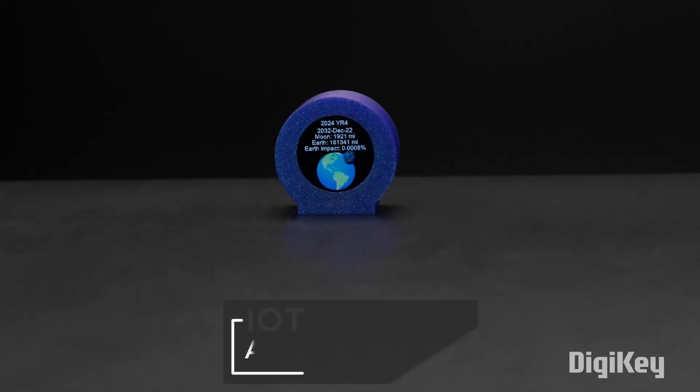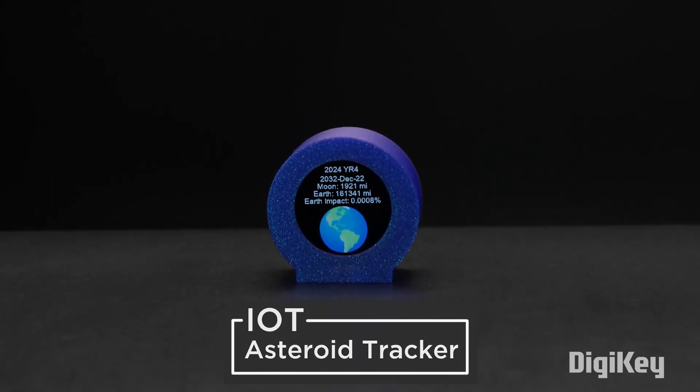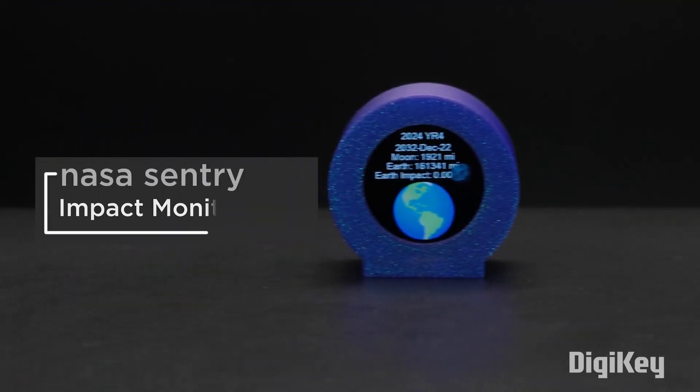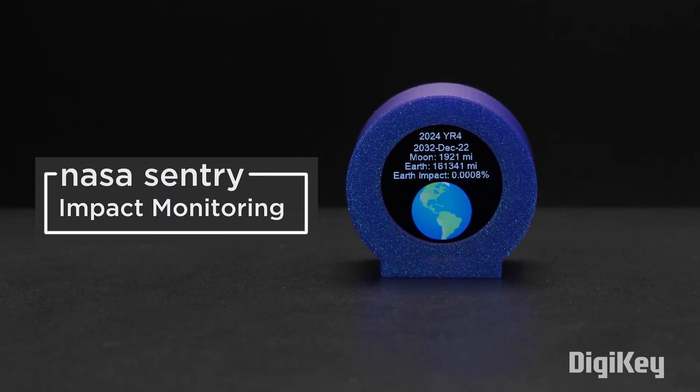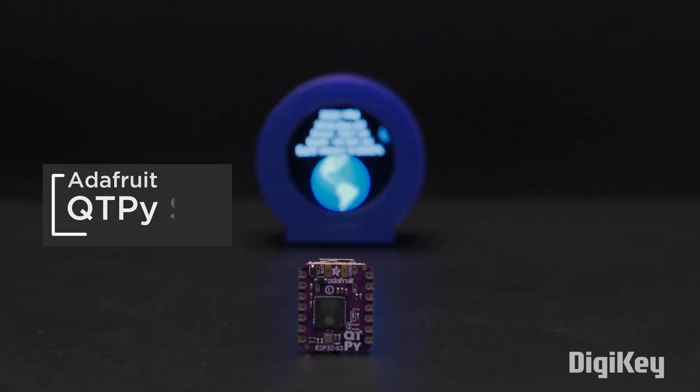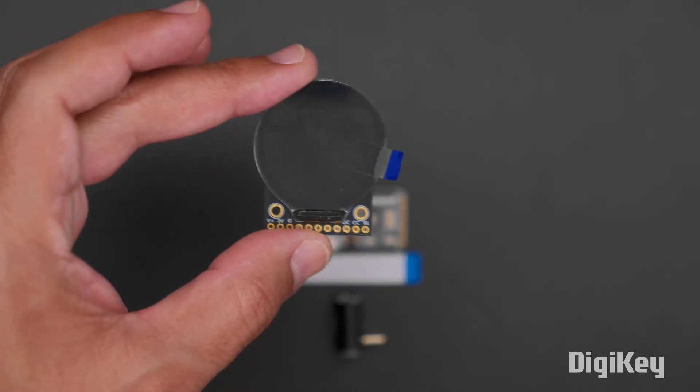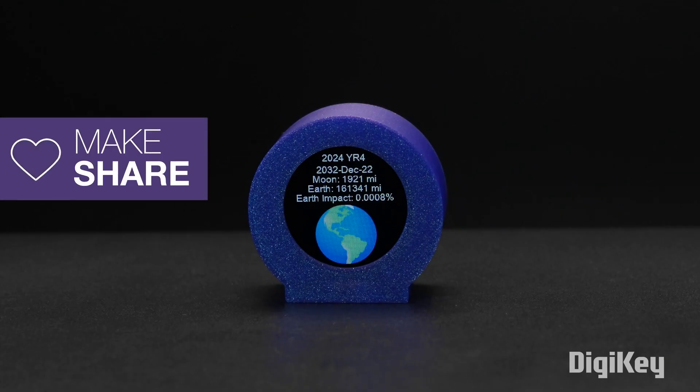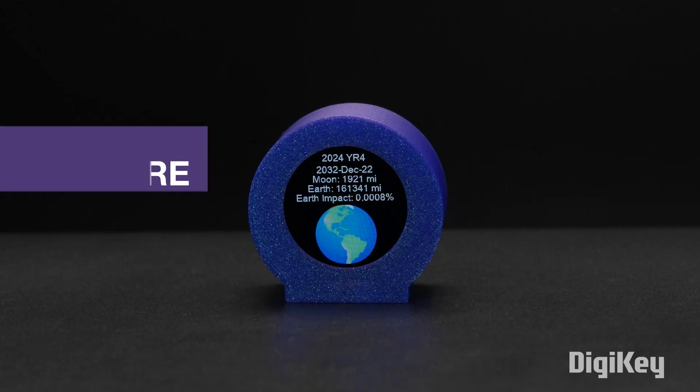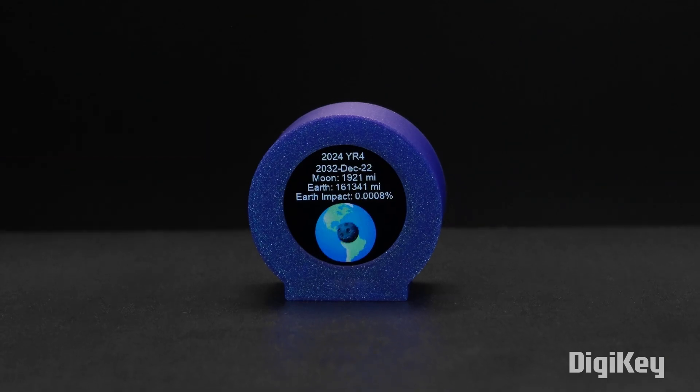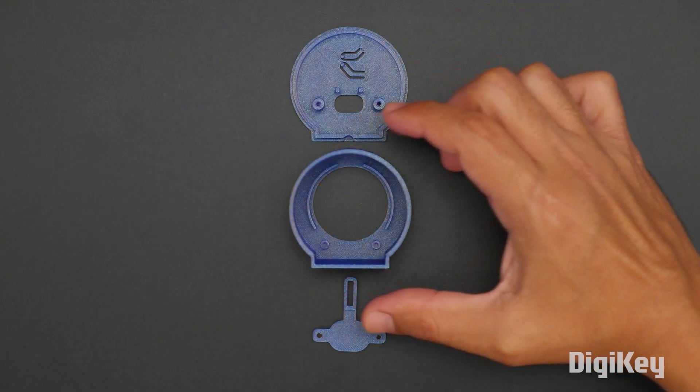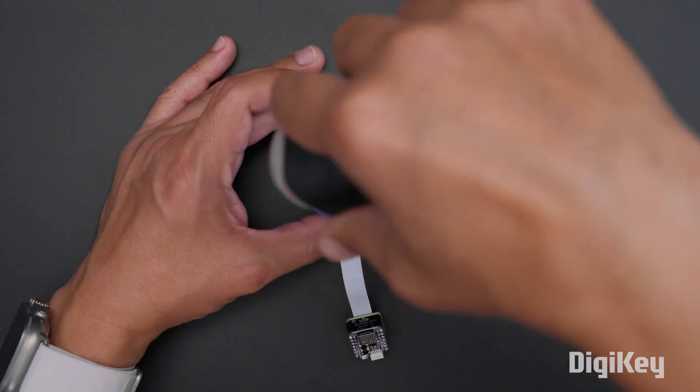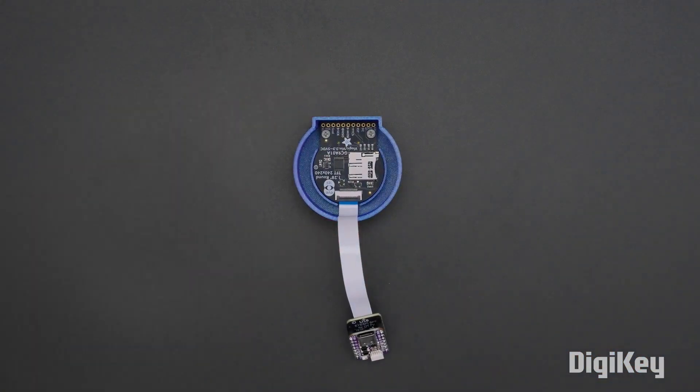If you're worried about the potential bombardment of the planet by asteroids, the Ruiz brothers have you covered with this Asteroid Tracker project. This is a small electronics project made from a CutiePie S3, an iSpy BFF, and a circular 1.28 inch display. The code is set up to track the Asteroid 2024 YR4, which until recently had a small chance of impacting the Earth. As is typical with their projects, the housing is entirely 3D printed and snaps together with minimal additional hardware.